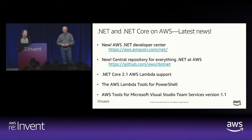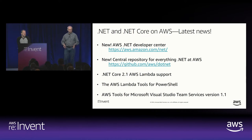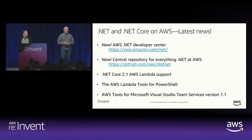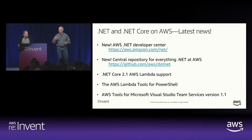Another thing we did is we wanted to have our PowerShell developers join the fun with Lambda. We created a new PowerShell module called AWS Lambda PS Core that allows you to point at your PowerShell script and run it as a Lambda function. It's distributed on the PowerShell Gallery — I highly encourage you to go check it out. We also launched an update to the tools for Microsoft Visual Studio Team Services, now called Azure DevOps.